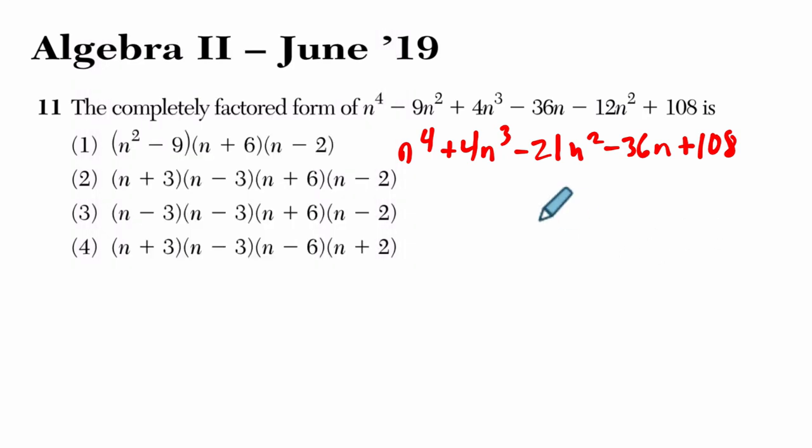Why is that helpful? Well, if 2 is a 0, then one of the factors is x minus 2. Or in our case, n minus 2.